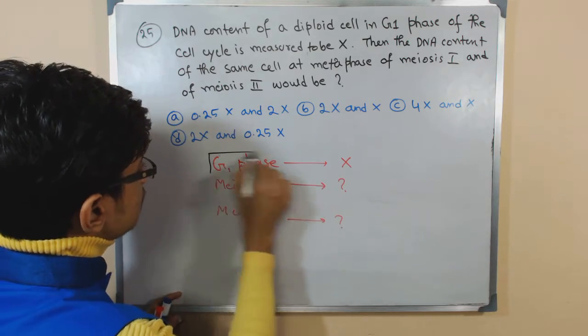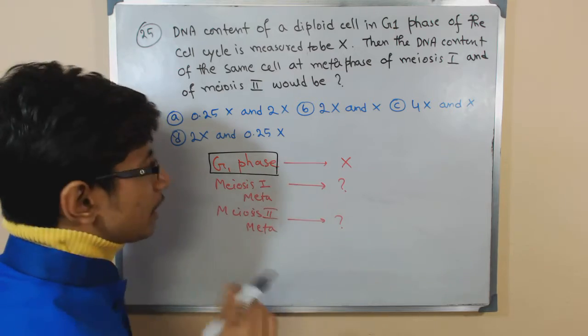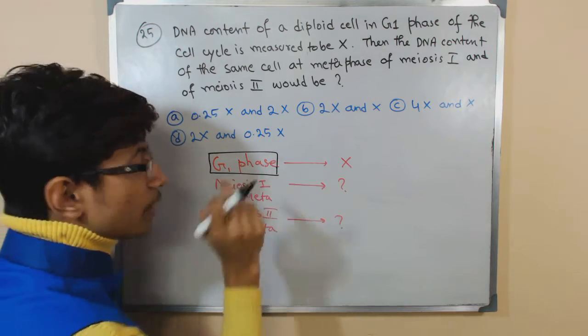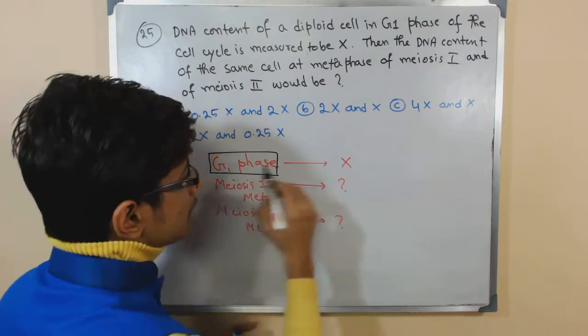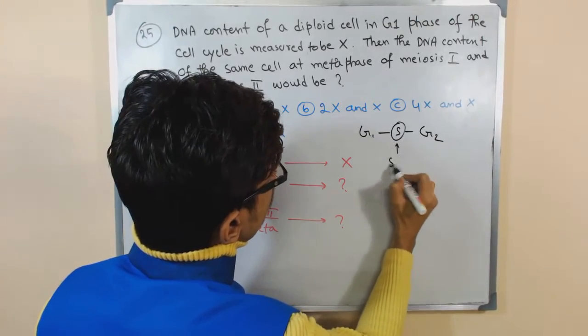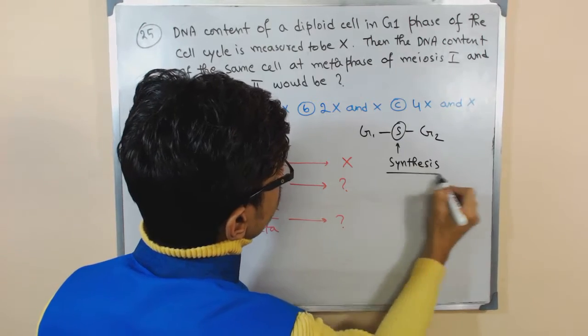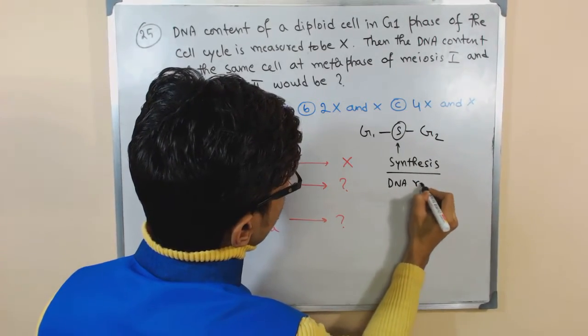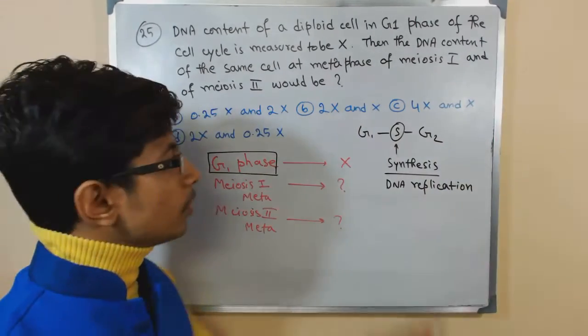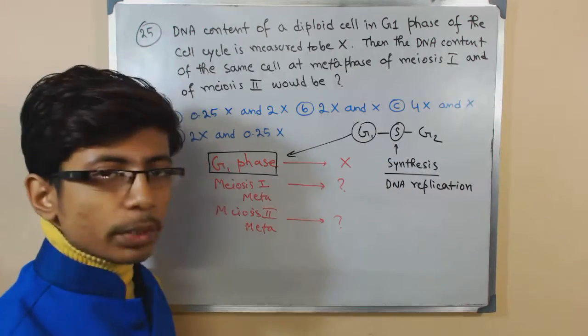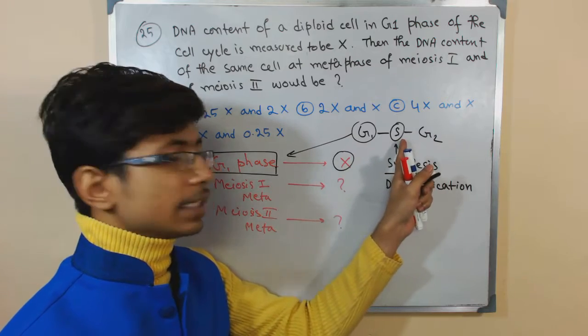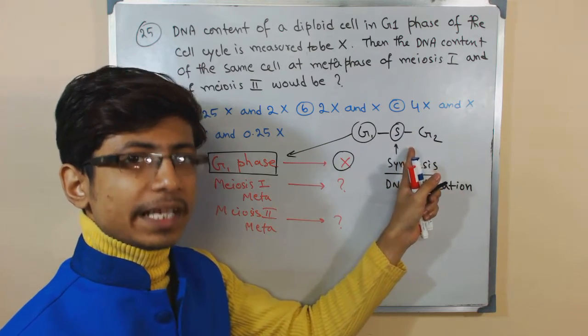In interphase, G1 phase means it is in interphase. So whatever number is present in the interphase will be doubled. Because in the interphase, there are G1 phase and G2. S is a phase called synthesis because at this particular stage, DNA duplication or replication takes place.